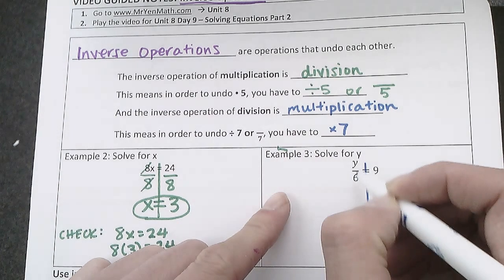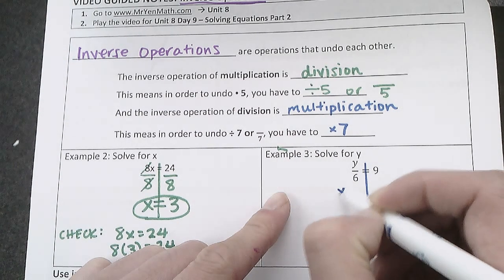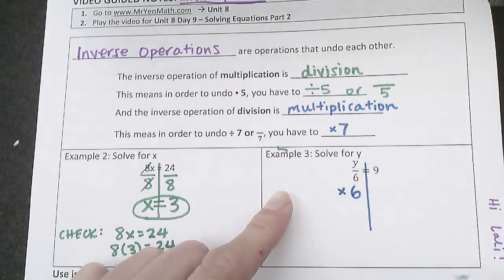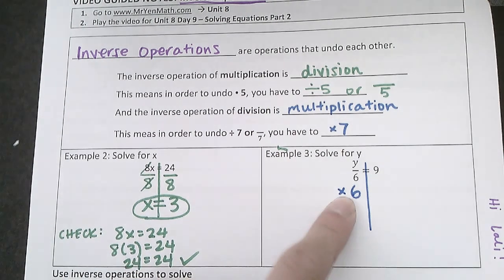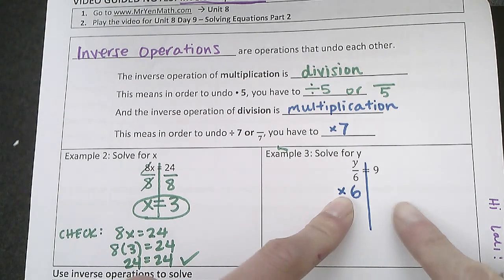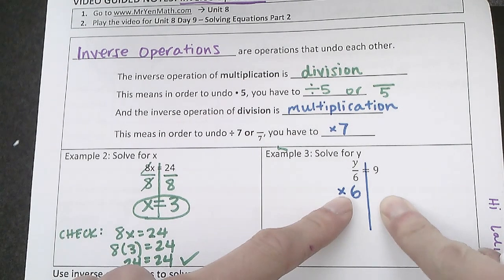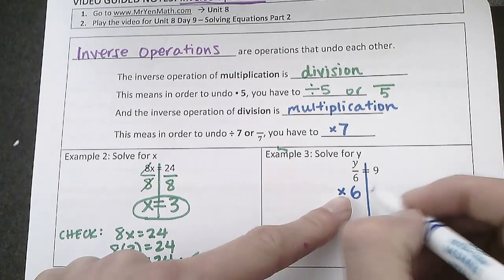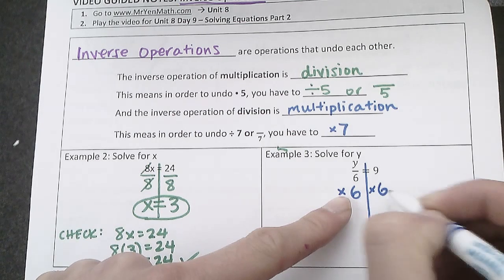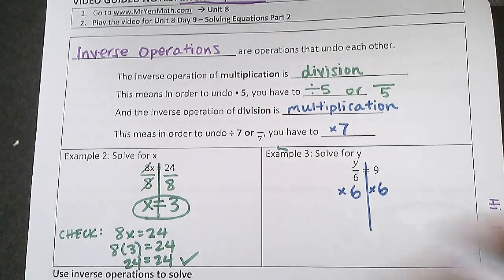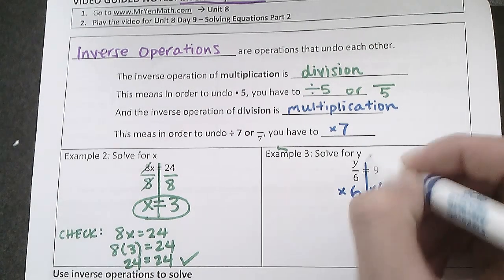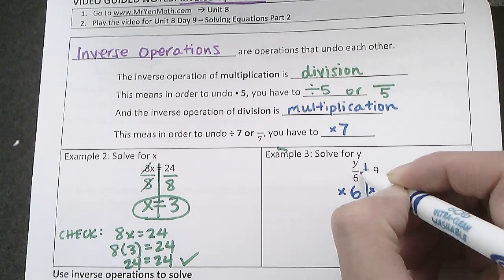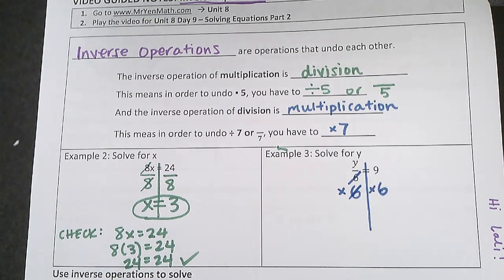So to get rid of the dividing by 6, to undo that, I'm going to multiply this side by 6. And if I multiply times 6 on the left side, I also have to multiply times 6 on the right side to keep it equal. Okay, so then now I have the divided by 6 is being multiplied by 6, so those cancel each other out.